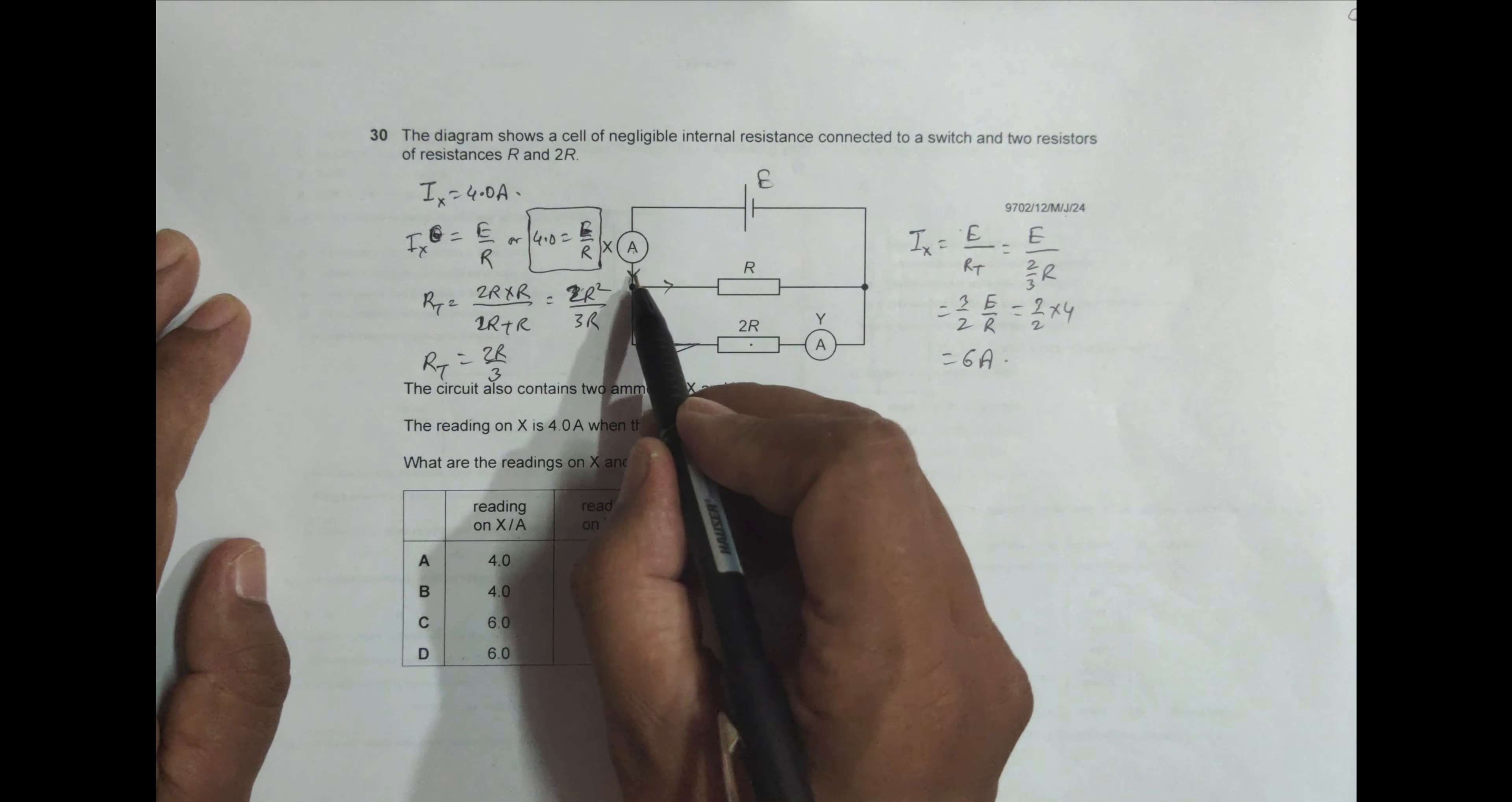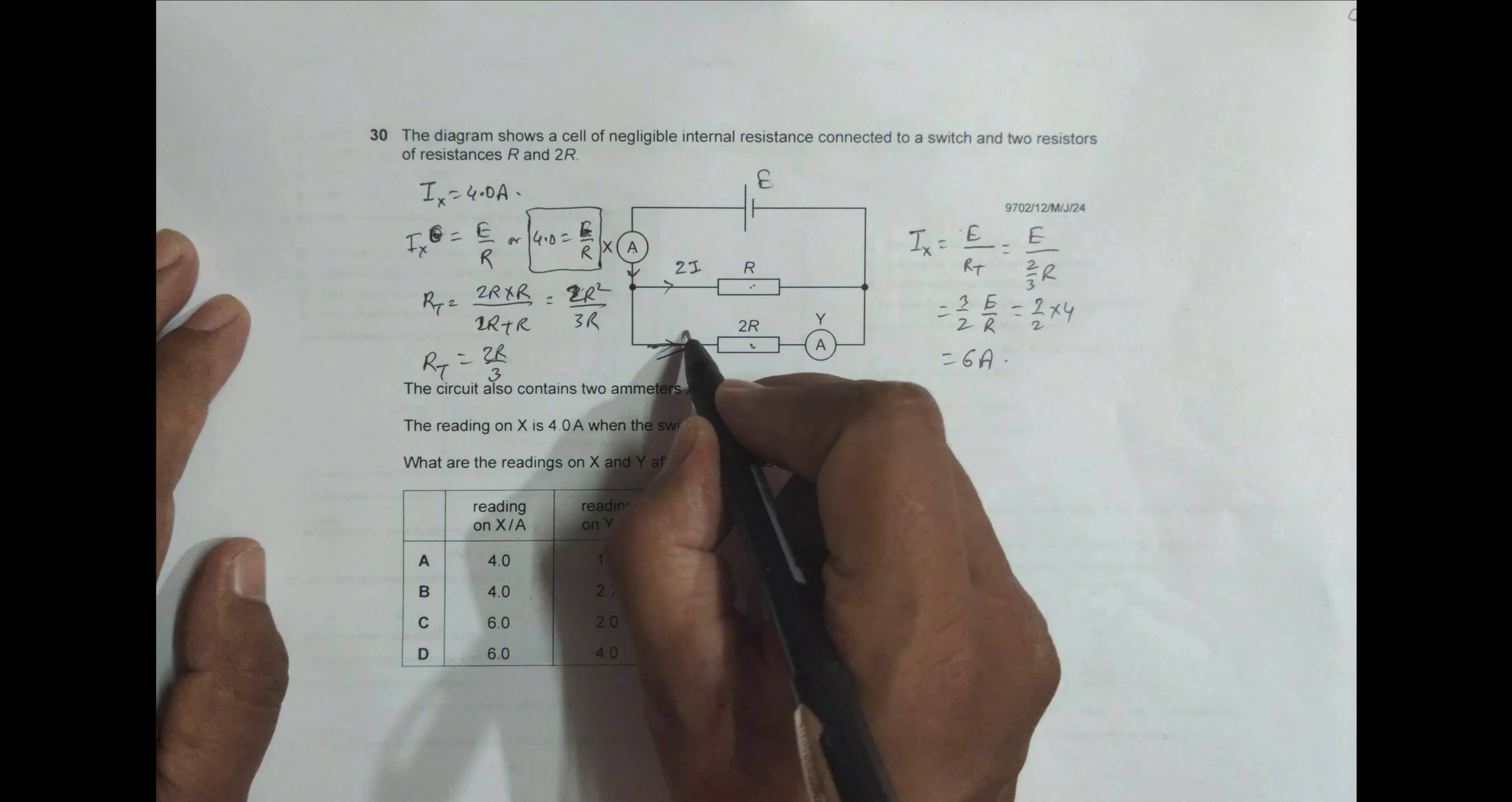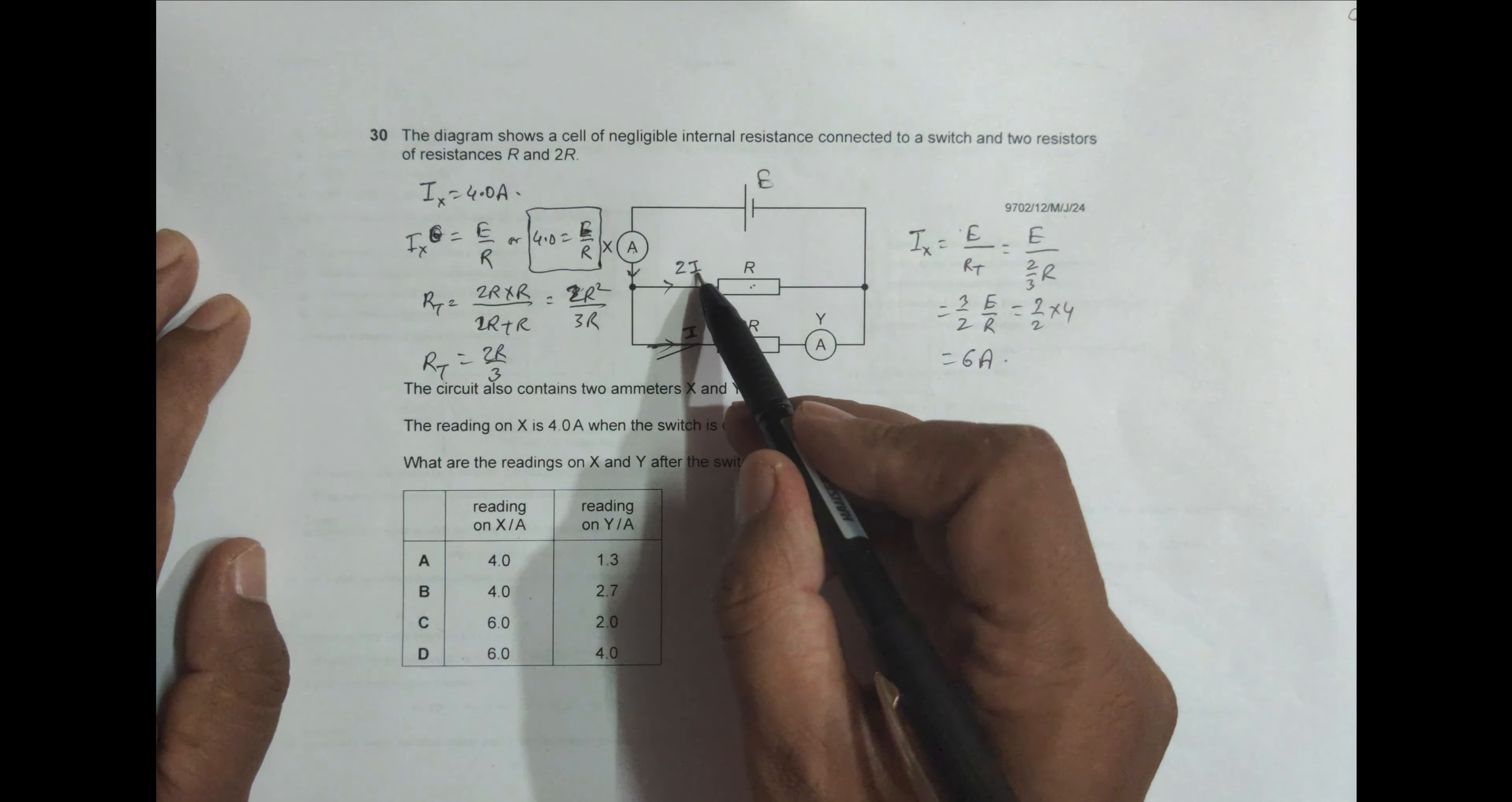Now what happens is among this 6 Ampere it divides into two parts here, and since the resistance here is half and this is twice, the current going here should be twice the I and this should be I. If this is I, the current going here should be 2I because it has got half of the comparative resistance.